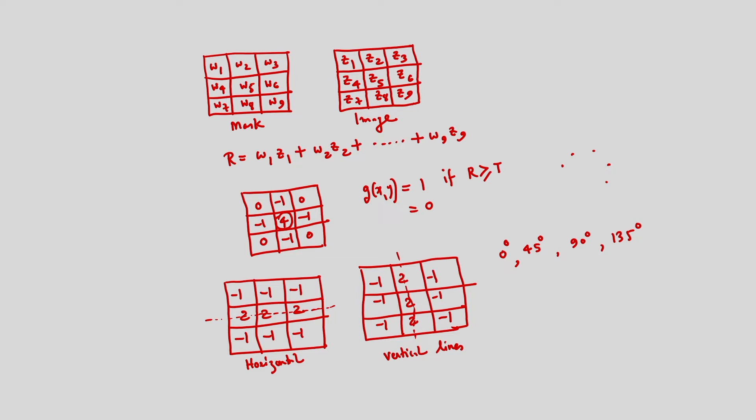However, for lines oriented in directions other than 0°, 45°, 90°, or 135°, it is not possible to detect them using masks alone. It is very difficult to detect lines oriented in arbitrary directions, which is why we need to consider the directional transformation called the Hough transform.